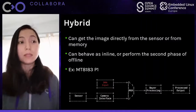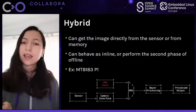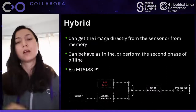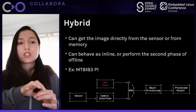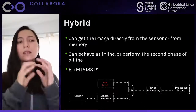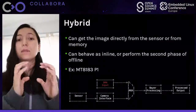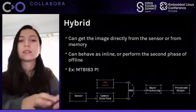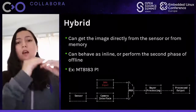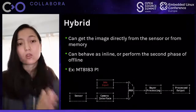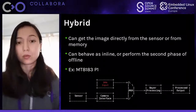We can also have hybrid devices that can get the image directly from the sensor or from memory, behaving as inline or performing the second phase of an offline ISP. One example is the MediaTek 8183 Pass One driver, which is not yet upstream but is published on the mailing list. The image can come from two paths: one is the DMA input from memory, and the other is a direct connection from the sensor through a camera interface.